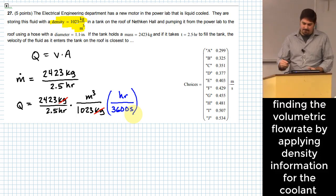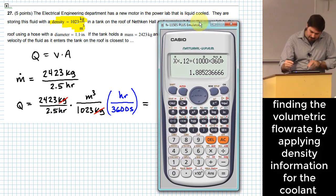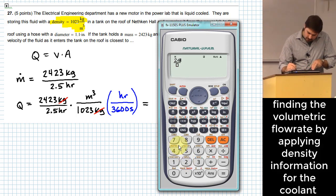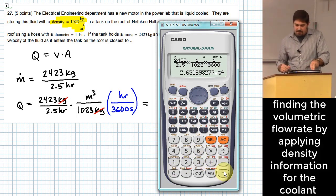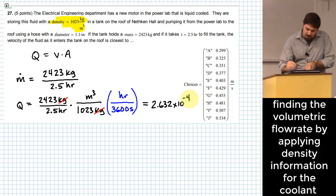Well, so what do I do with that? I can calculate it, I guess. Let's put in 2,423 over 2.5 times. Here I've got 1 over 1,023 and then I've got 1 over 3,600. Okay, 2.632 times 10 to the minus 4, and this is going to be in cubic meters per second.